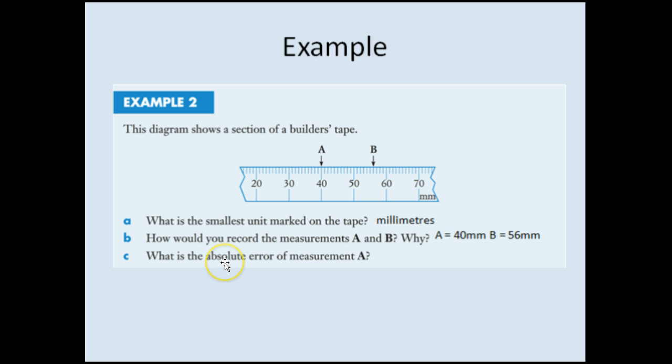Last question, what is the absolute error of measurement A? So like I said before, if this A, if this arrow was a little bit down, so in between 39 and 40 millimeters, I would be rounding up. And if it was between 40.5 millimeters, then I'd be rounding down or just below 40.5 millimeters.